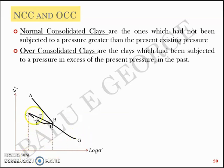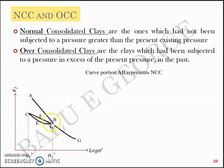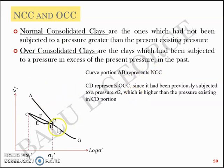I can mark two points here. C corresponds to sigma one dash, and B corresponds to sigma two dash. The curved portion A-B represents normally consolidated clay — in portion A-B, the soil had not been subjected to a higher pressure. That is NCC. C-D represents OCC, because the soil had been subjected to a higher pressure in the past, sigma two dash, and in the portion C-D, since it's subjected to just sigma one dash, the behavior is like OCC, over consolidated clays.